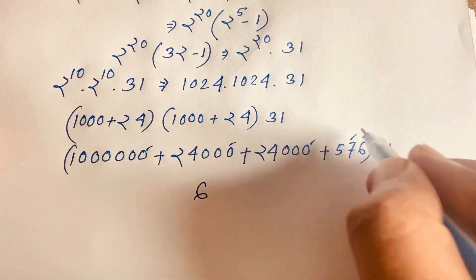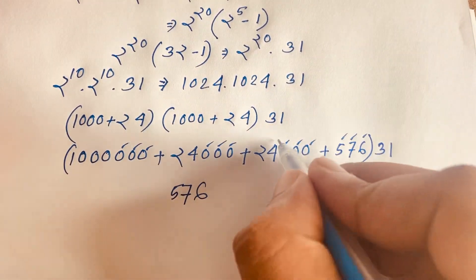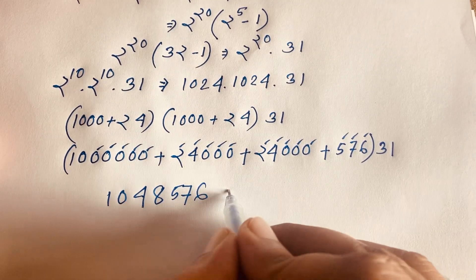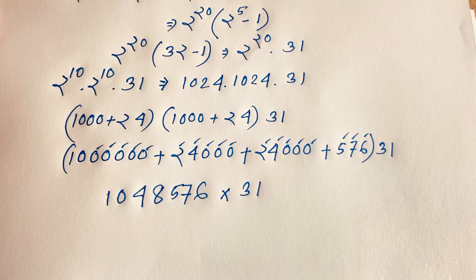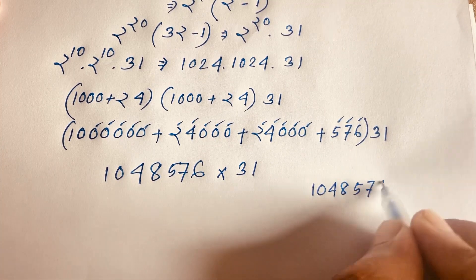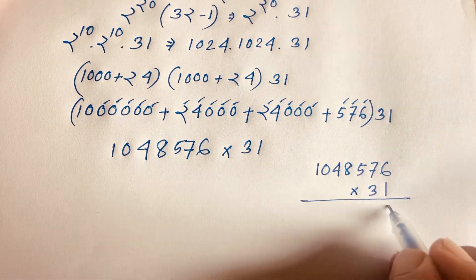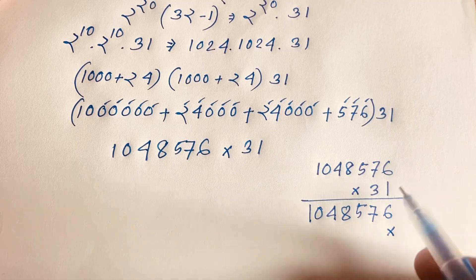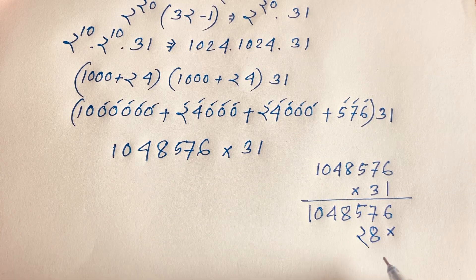Working through the multiplication step by step: 1024 times 1 gives 1024; then 1024 times 3 tens: 3 times 4 is 12, 3 times 2 is 6 plus carry, 3 times 0 is 0, and so on. Combining the partial products row by row, carrying as needed, we get the value 1,048,576.